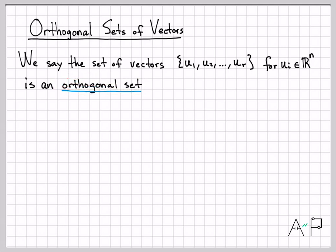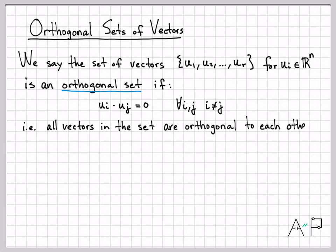We previously defined what it means for two vectors to be orthogonal to each other. Now we're defining this new term called an orthogonal set if every single vector in the set is orthogonal to every other vector in the set. So ui·uj = 0 for all i's and j's, obviously except for when i and j are equal to each other. So I have an orthogonal set of vectors if any two vectors I grab out of here, I compute their dot product, I get 0. In other words, all vectors in the set are orthogonal to each other.